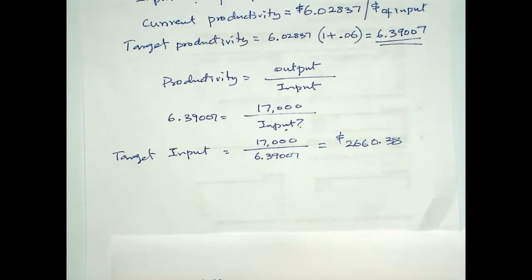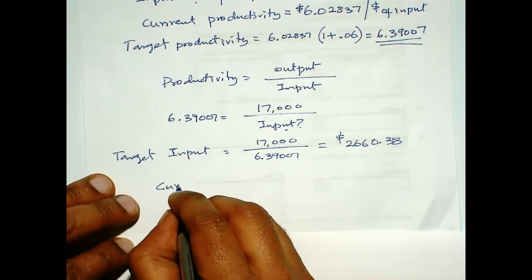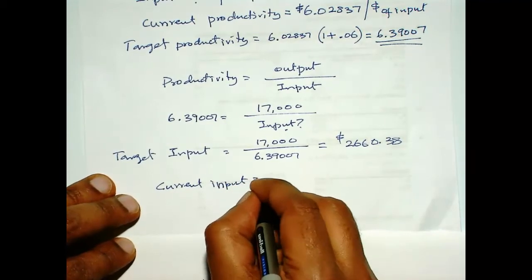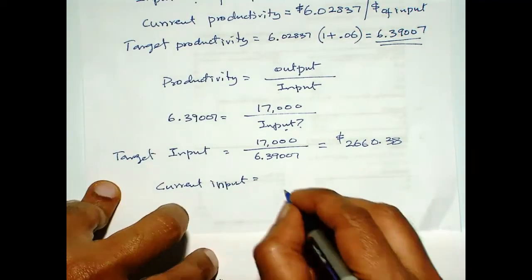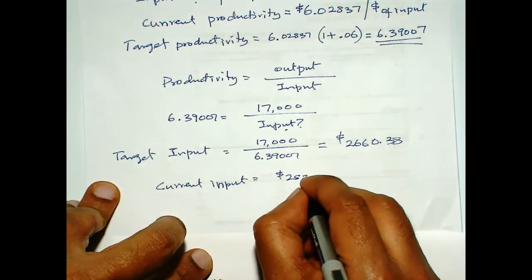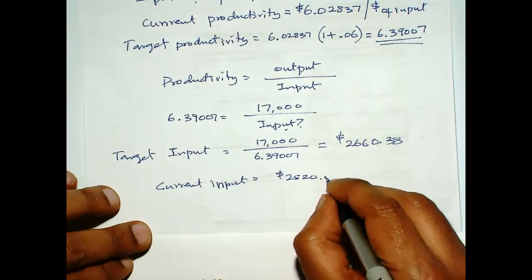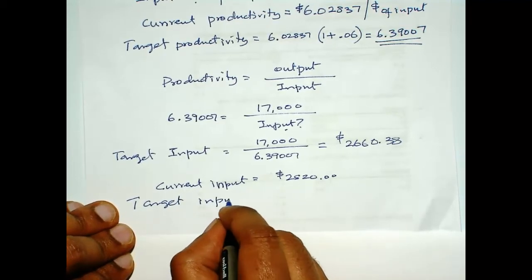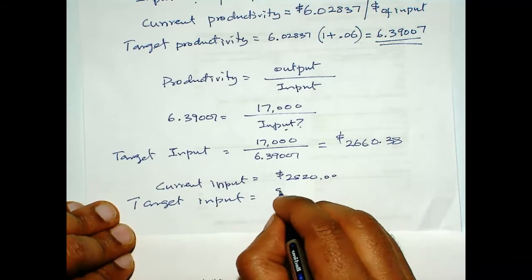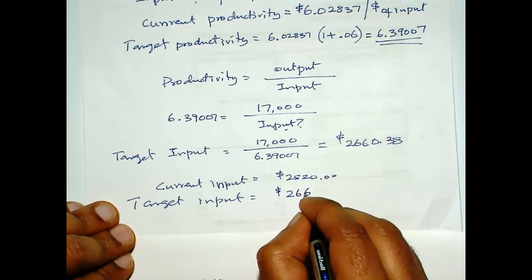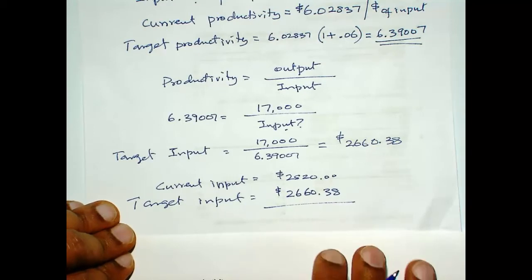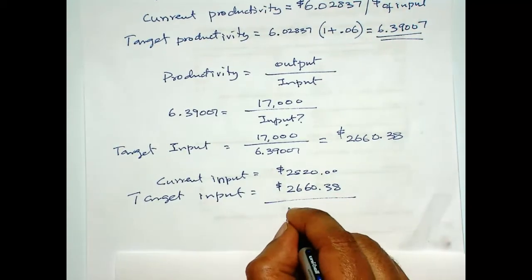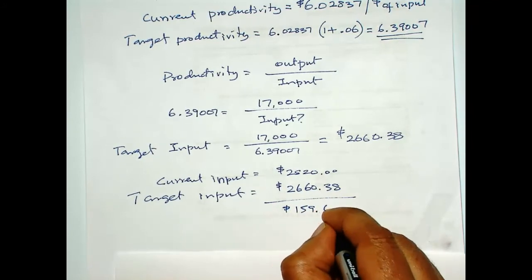So, current input is $2820, our target input is $2660.38. So, the difference which is $159.62,